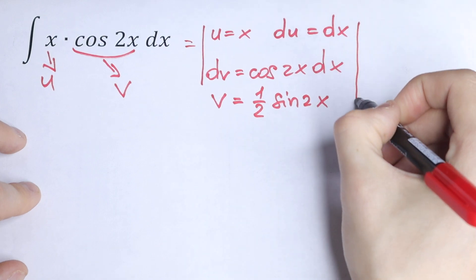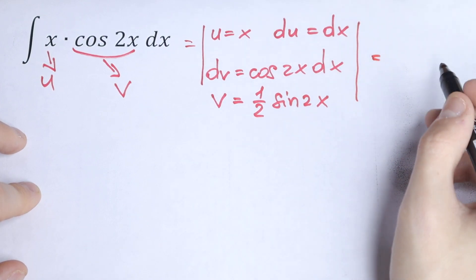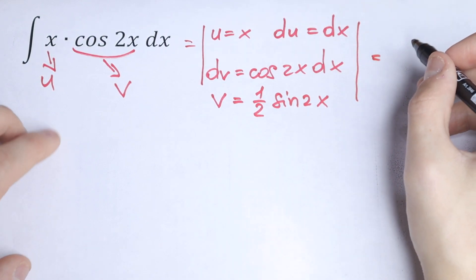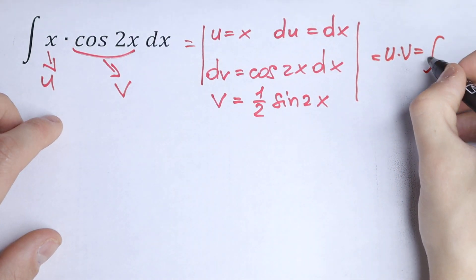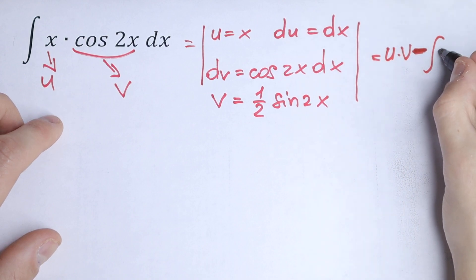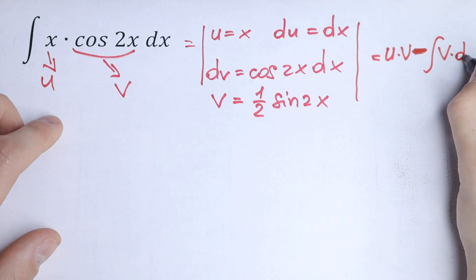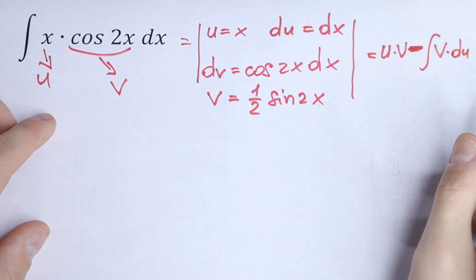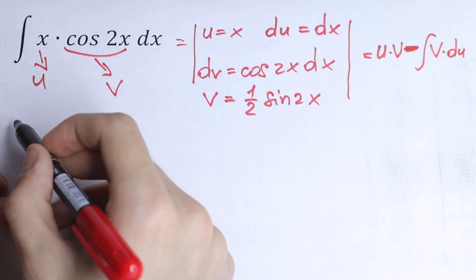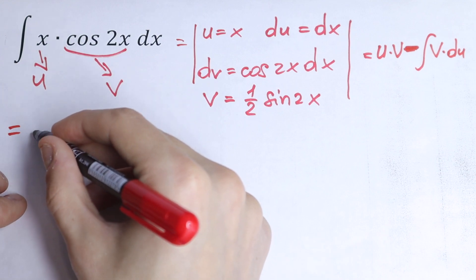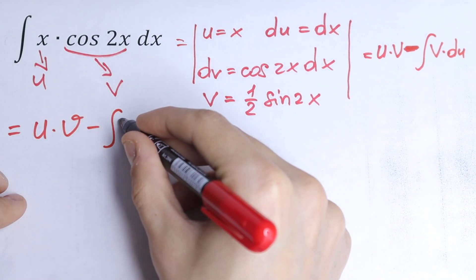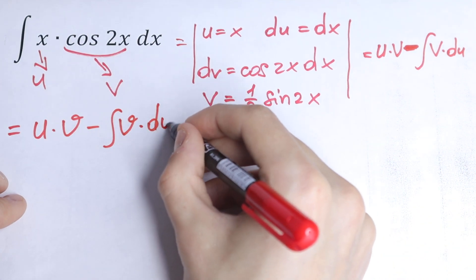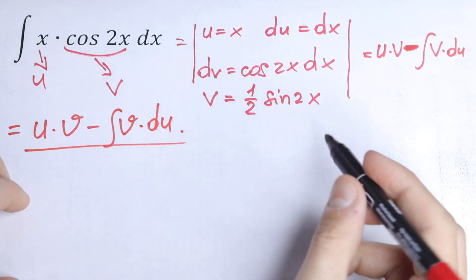So what are we going to do next? We all know the formula. If we integrate by parts, this integral will be equal to u times v minus integral of v times du. So this is our formula.